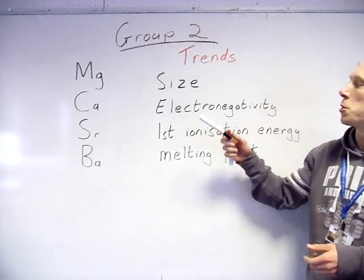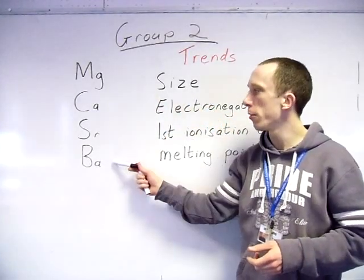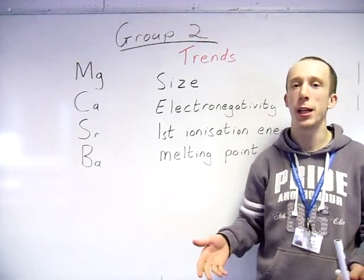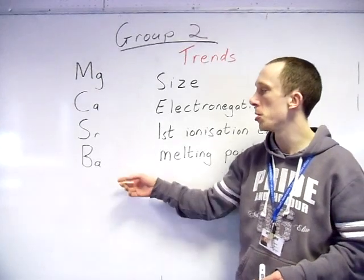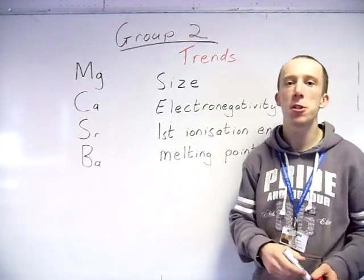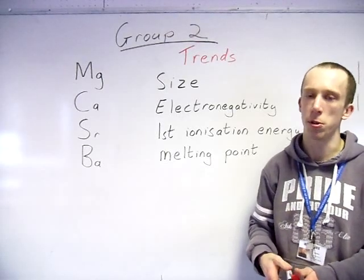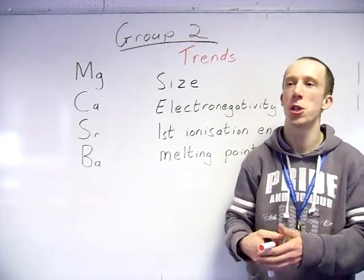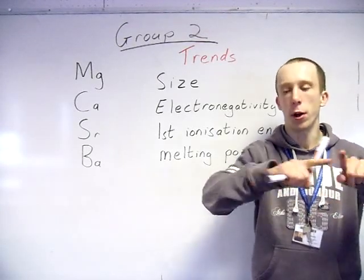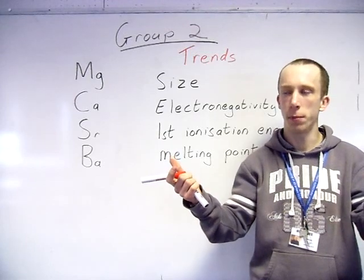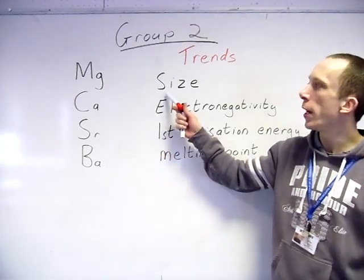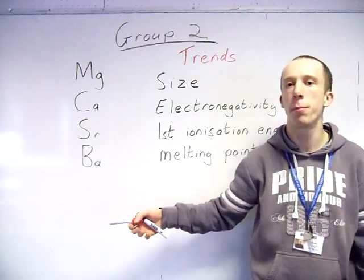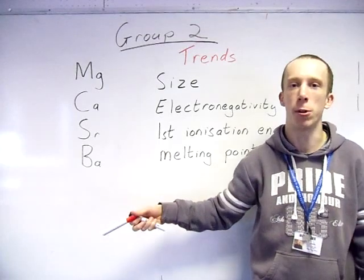We'll start with size. The size of the Group 2 metal going down fairly obviously increases. Going down practically every group it increases in size. Now the reason why, do not simply state it is because of an increased amount of electrons. It's fairly bad scientific knowledge because you've learned in Group 1, across the period, fluorine is smaller than carbon yet fluorine has more electrons. When answering, if you're seeing an increase in size going down the group, you need to put across the point that it's because of an increase in energy levels or an increase in shells.